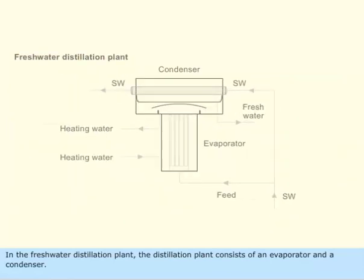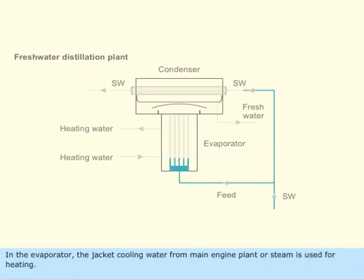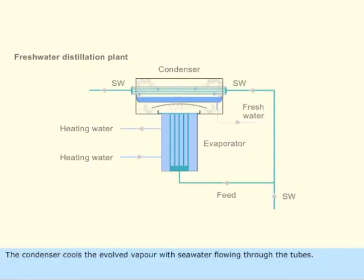In the freshwater distillation plant, the distillation plant consists of an evaporator and a condenser. In the evaporator, the jacket cooling water from the main engine plant or steam is used for heating. The condenser cools the evolved vapor with seawater flowing through the tubes.